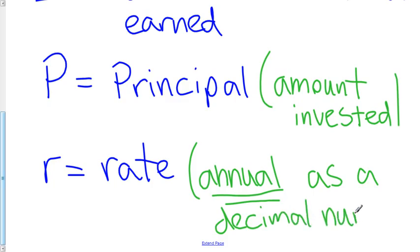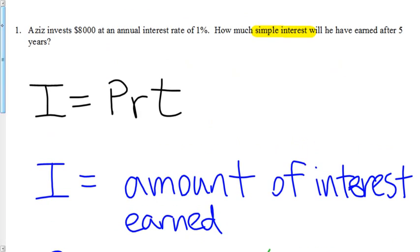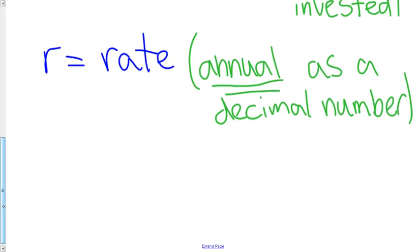This is really important because most students when they try to solve these problems, the biggest mistake they make is they put in the rate as 1 rather than as the decimal number 0.01, and they wind up getting an answer that's two decimal places off.